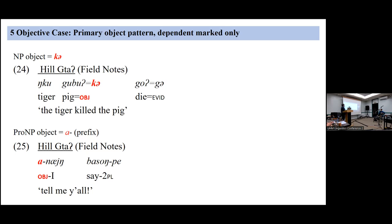One thing I should mention: I was looking at declarative sentences in the template I showed you. In imperatives, the pattern is typically verb-subject, so that's the one exception where you see a consistently different pattern.